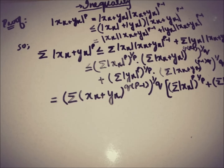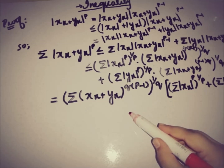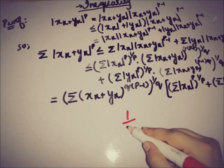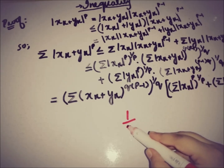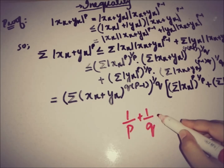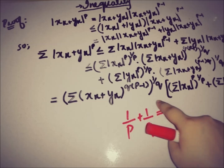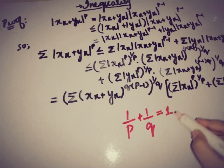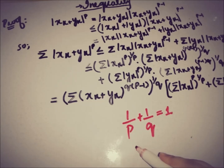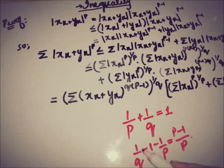Now we use the relation between P and Q: they are conjugate indices, as discussed in the previous video on Hölder's inequality. Since 1/P + 1/Q = 1, we can derive that 1/Q = 1 − 1/P = (P−1)/P, which gives Q(P−1) = P. So we replace Q(P−1) with P in the exponent.